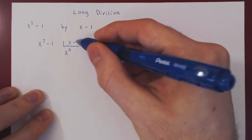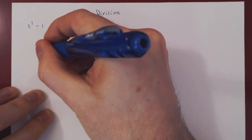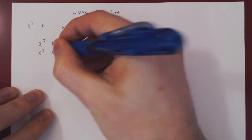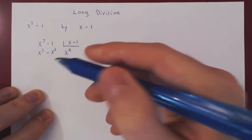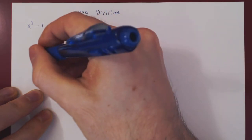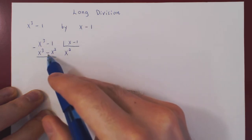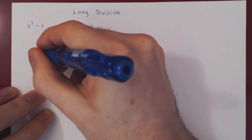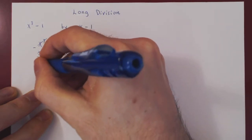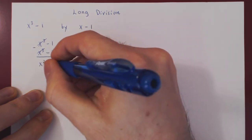We multiply the entire polynomial by x squared and get x cubed minus x squared. Now we simply subtract these two polynomials. x cubed minus x cubed is 0. Be careful — we get negative negative x squared, so it gives us positive x squared. And we have a negative 1; there's no constant term, so it's just negative 1.